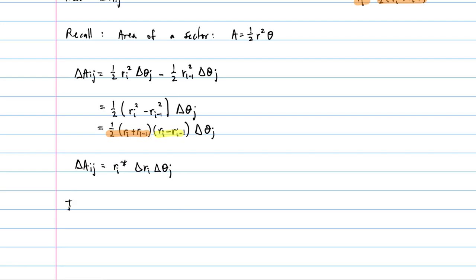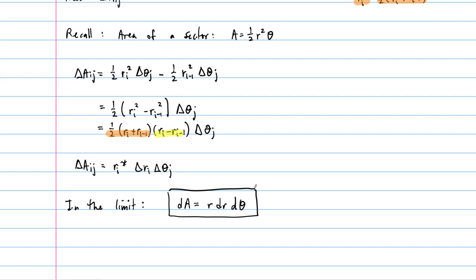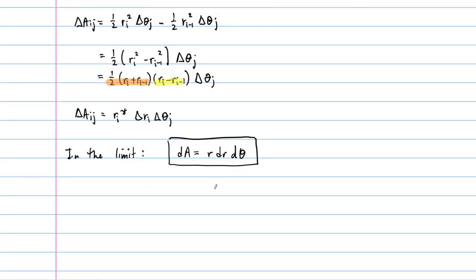In the limit, delta A_ij tends to dA, r_i* tends to r, and delta r_i and delta theta_j tend to dr and d theta. So the area element in polar coordinates is r dr d theta — not just dr d theta, but r dr d theta. This is very important to remember.